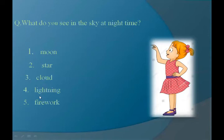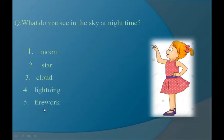The next is lightning. The spelling is L-I-G-H-T-N-I-N-G, lightning. We see lightning in the sky during the rain or at nighttime. At the time of lightning, the sky becomes bright. The next is firework: F-I-R-E, fire, W-O-R-K, work — firework. We see firework in the sky at nighttime. The things we see at night are: moon, star, cloud, lightning, and firework.